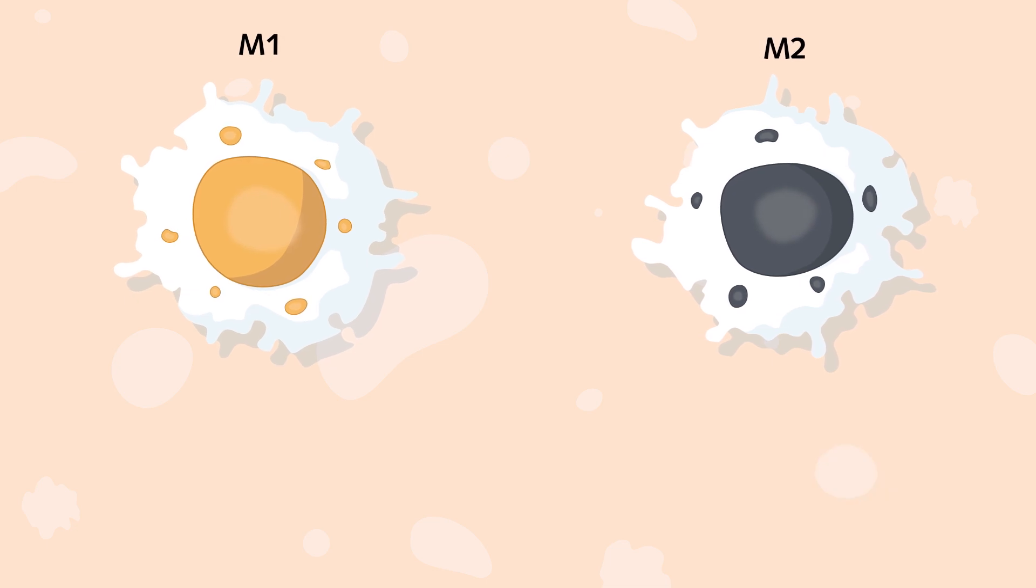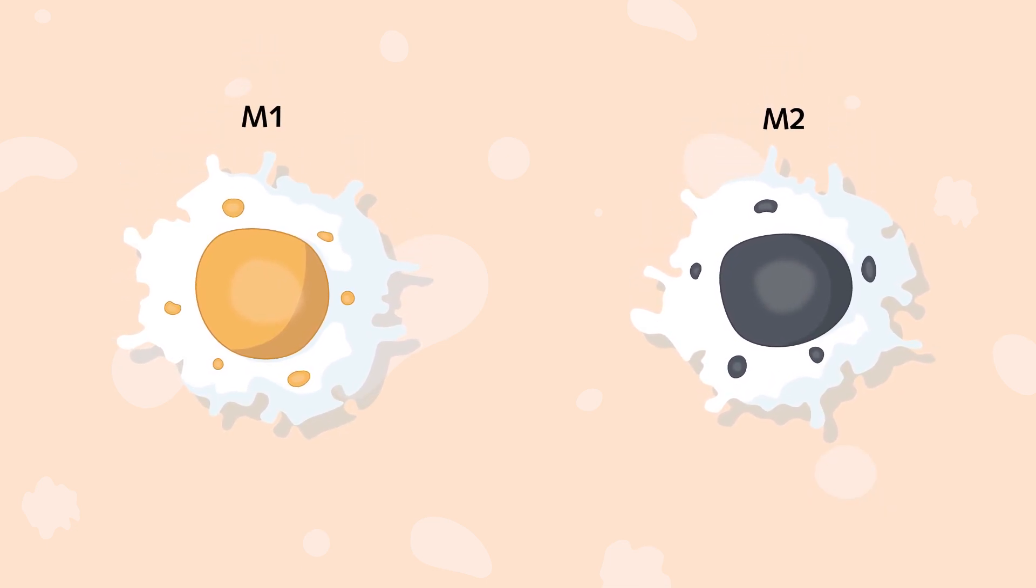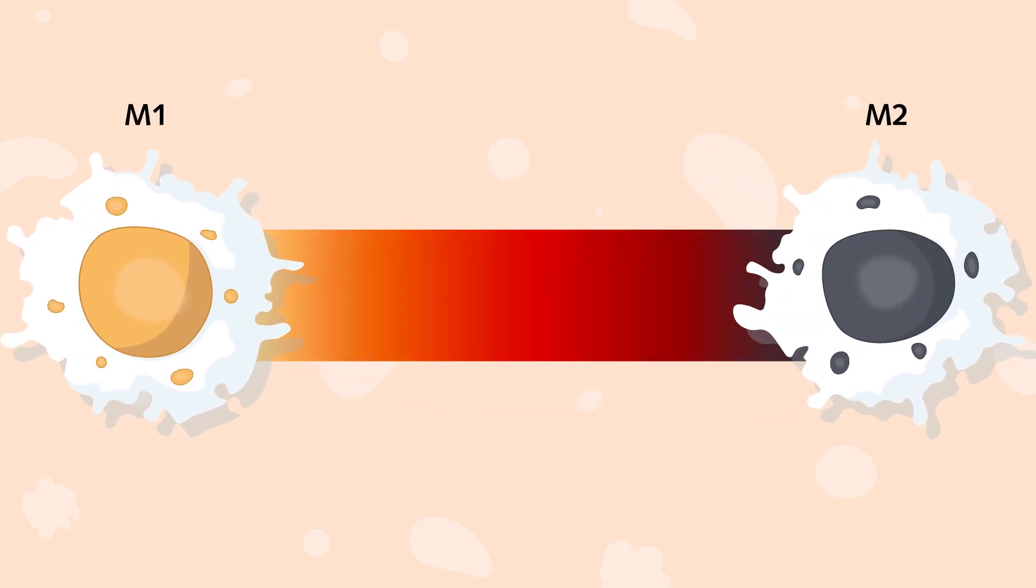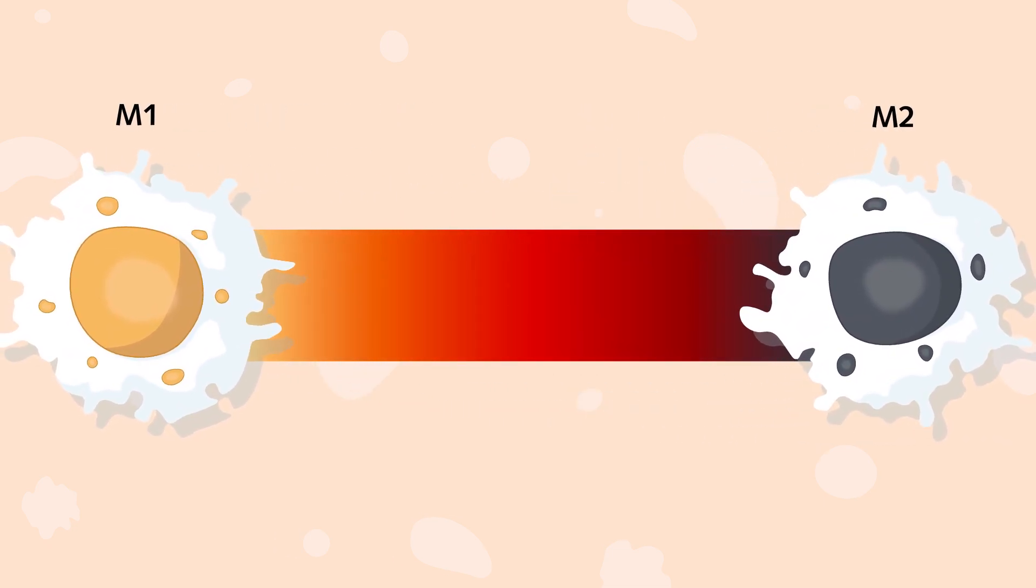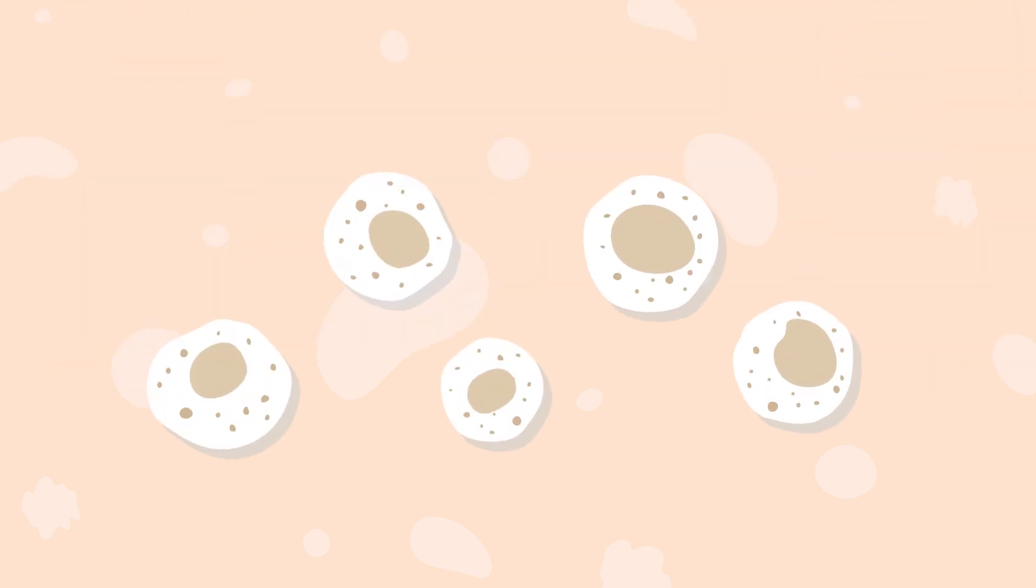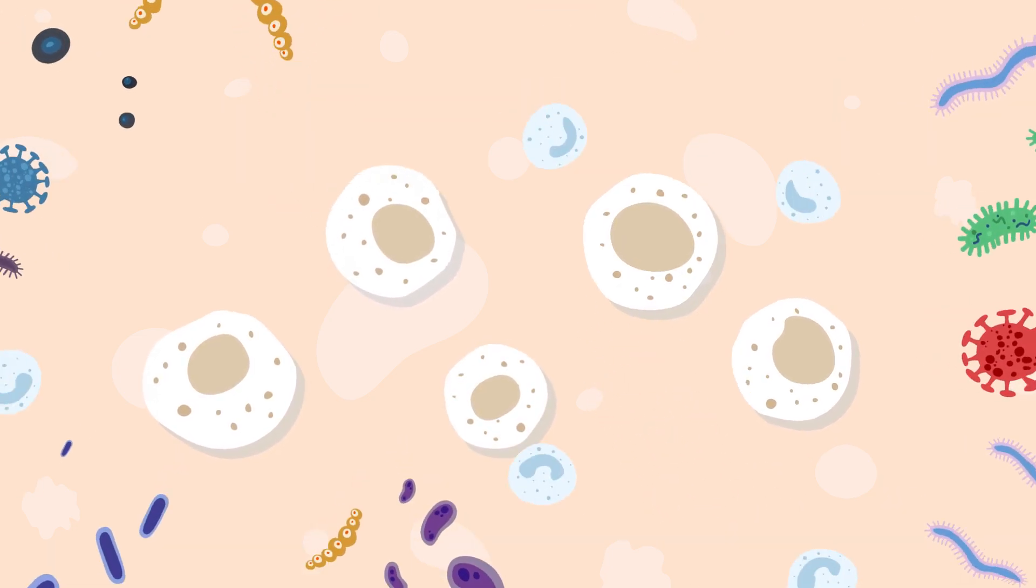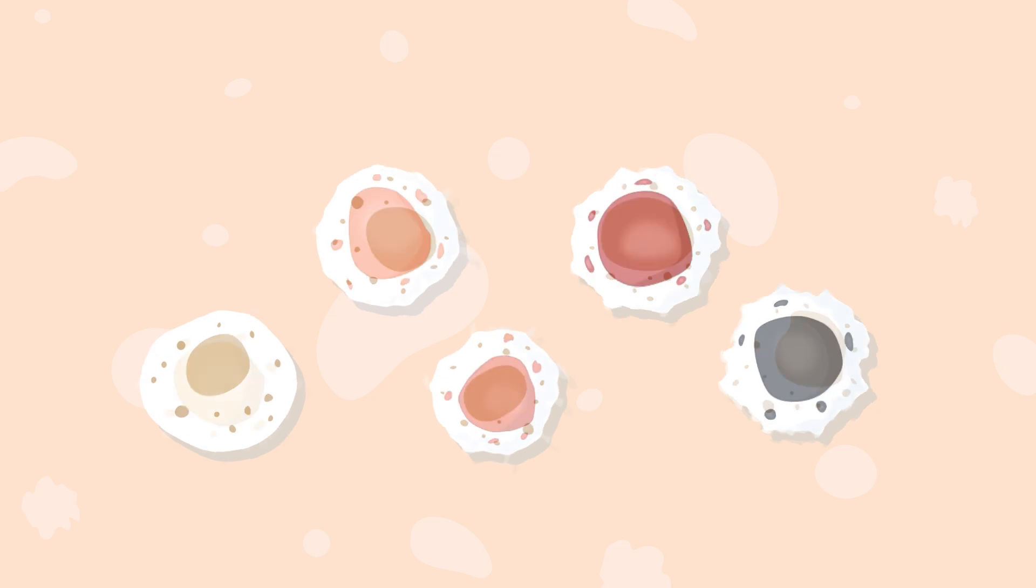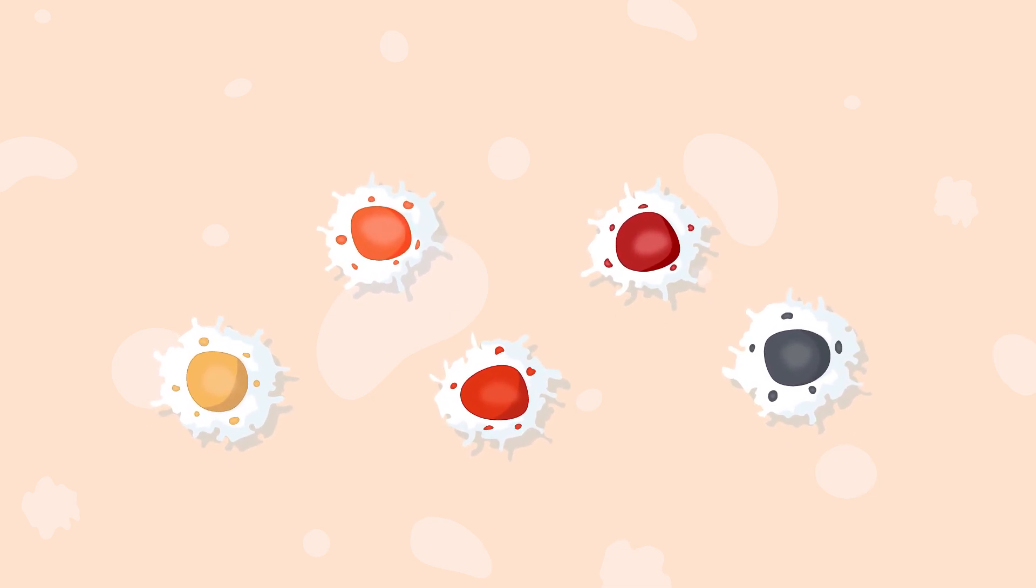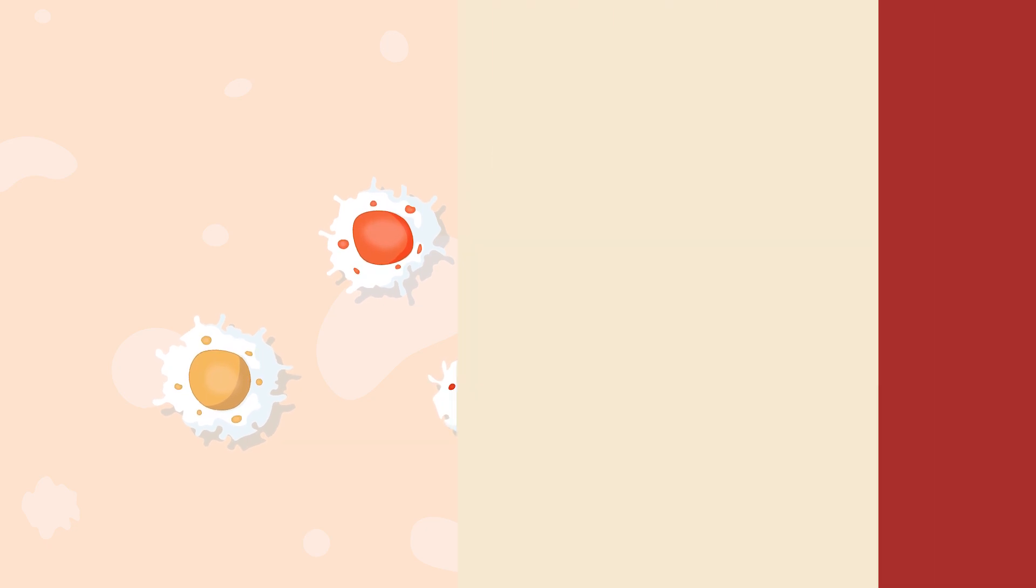The progressive discovery of multiple functions held by macrophages revealed M1 and M2 as two extremes of a wide spectrum of macrophage subtypes. In response to environmental variations such as pathogen presence, a wound, or interactions with immune cells, macrophages can rapidly change their phenotype, resulting in a large range of macrophage subtypes.